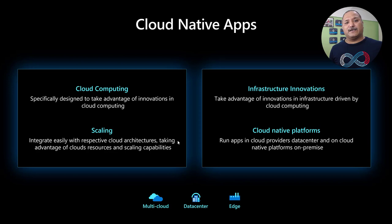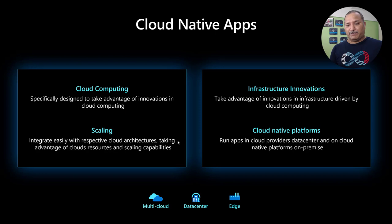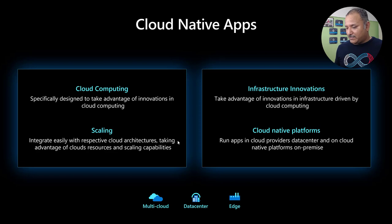Cloud native applications are also based on different providers — not just the public cloud. We also have facilities where private cloud providers like OpenShift, Pivotal Cloud Foundry, and VMware provide their own cloud services which can be deployed on-premise. So cloud native applications are those applications which are easy to build and deploy to any of these scenarios — it can be private cloud, public cloud, multi-cloud, hybrid cloud, it can run on the data center of the organization, or it can even run on the edge.